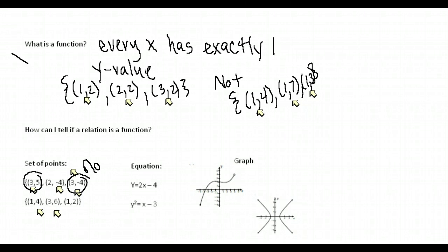Look at this next example: (1,4), (3,6), (1,2). Is that a function? Yes or no? The answer is no. That's also a no because 1 goes to 4, and 1 also goes to 2. That can't happen.